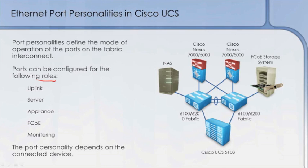At the highest level, we've got the Fabric Interconnect, and it's going to have either an uplink going out to the rest of the world. This could be like a Cisco 6500, it could be a Nexus 7000, or it could be a pair of Nexus 7000s configured in VPC so that we could create a port channel. The role of an uplink port is to connect the UCS to the rest of the network.